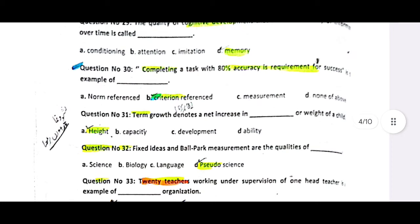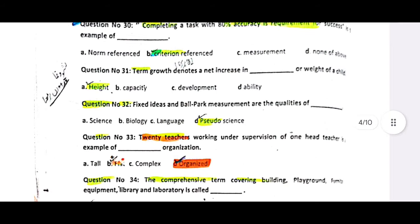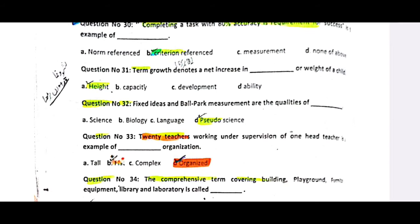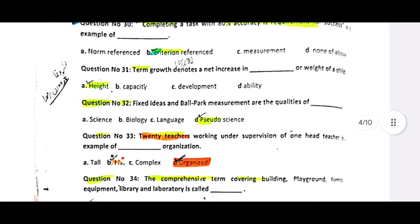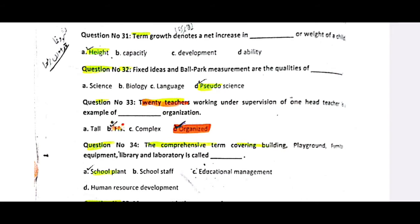The term growth denotes a net increase — so growth refers to height, whereas development is broader. When 20 teachers are working under the supervision of one head teacher, this is a flat organizational structure; when the hierarchy level is higher, it is a tall structure.